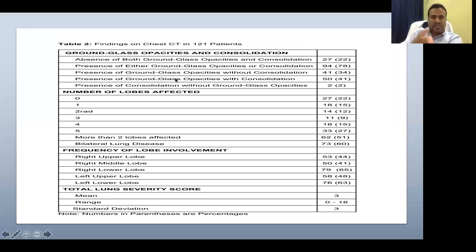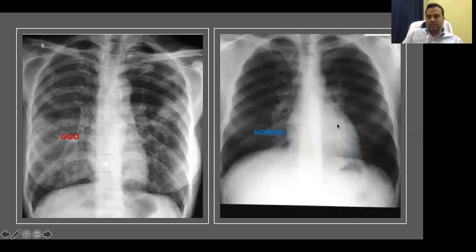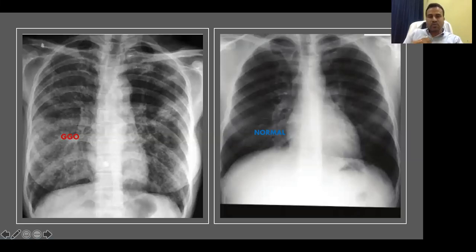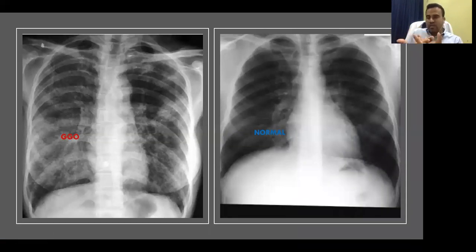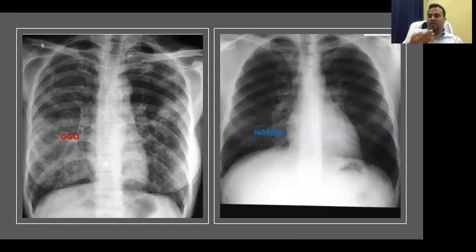Either both ground glass opacity or consolidation will appear. Consolidation looks like a white, solid shadow, while ground glass looks like a crushed piece of glass. In viral pneumonia, ground glass appearance is more common because air bubbles and carbon dioxide get trapped, and inflammatory changes also contribute. The hallmark is bilateral peripheral ground glass opacity or consolidation — the X-ray part is now clear.